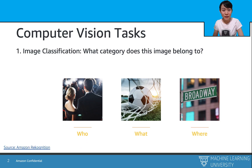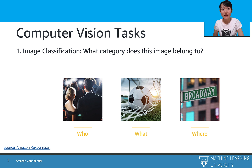The first and most widely used task is image classification. For a given image, we assign a label for the whole image. It can be a person, it can be a thing, or it can be a location.